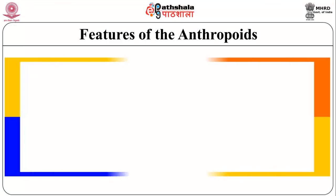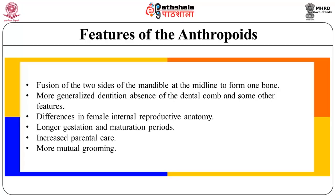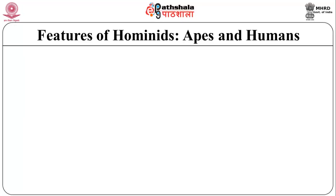Features of the anthropoids — monkeys, apes, and humans: they have a large average body size, larger brain in absolute terms and relative to body weight, reduced reliance on olfaction indicated by the absence of the rhinarium and other structures, increased reliance on vision with forward-facing eyes placed more to the front of the face, greater degree of color vision, back of eye socket protected by a bony plate, blood supply to brain different from that of lemurs and lorises, and fusion of the two sides of the mandible at the midline to form one bone.